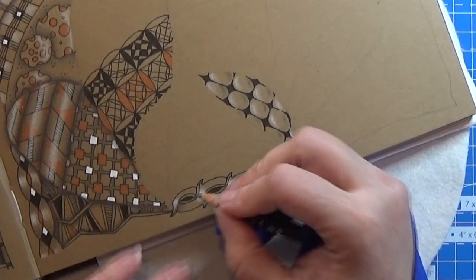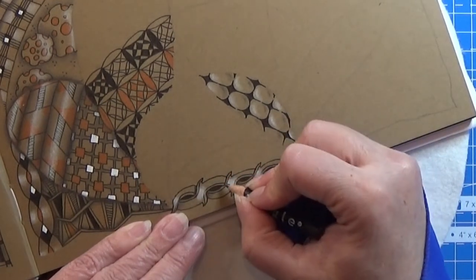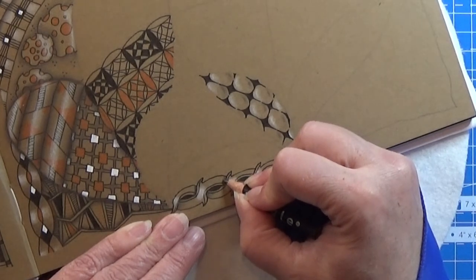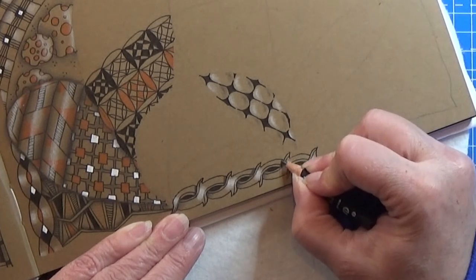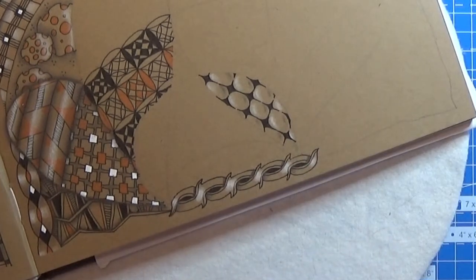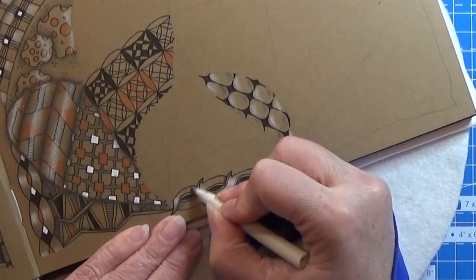And I'm doing the same on the other side. Turn your paper around to make it lie right for you, and then taking my tortillon and soften it out.